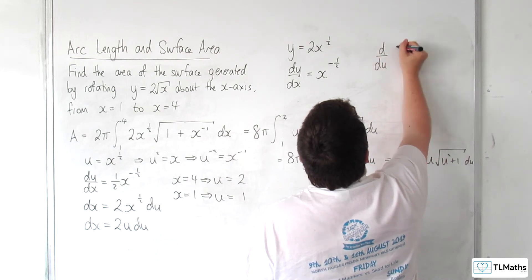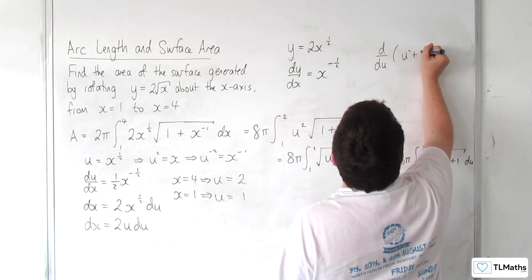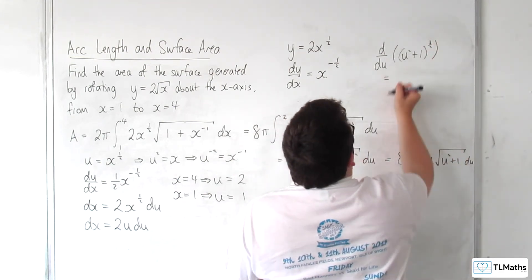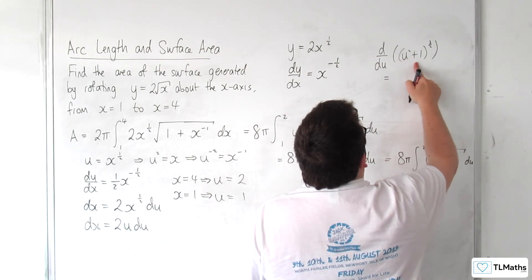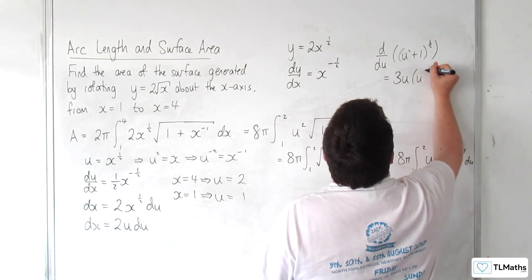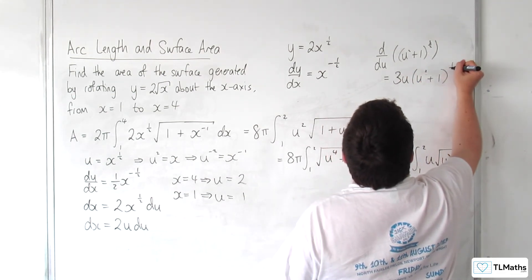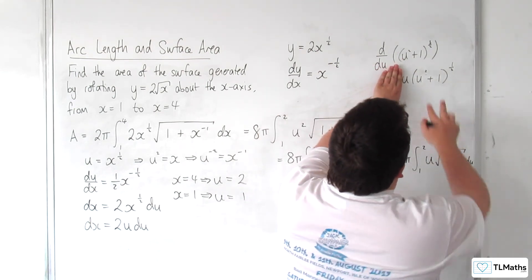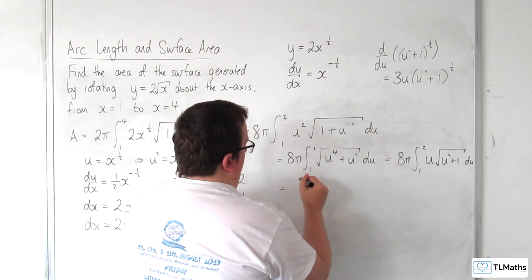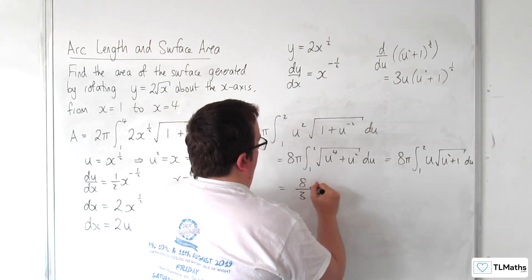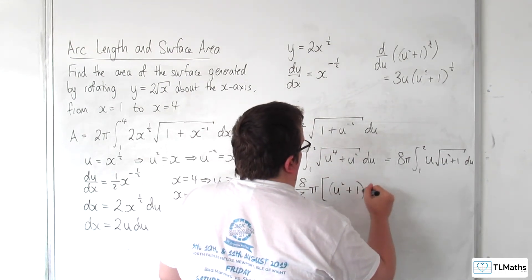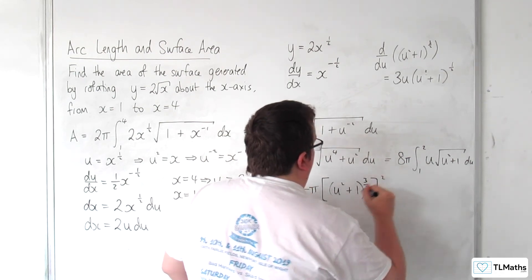So d by du, I'm going to add 1 to the power of this, so u squared plus 1 to the power of 3 halves differentiates to 2u is the derivative of the inside, times by 3 halves is 3u, u squared plus 1 to the half. So if that differentiates to that, then that must integrate to a third of that. So we can bring the third out and have 8 thirds pi times by u squared plus 1 to the 3 halves, evaluated between 1 and 2.